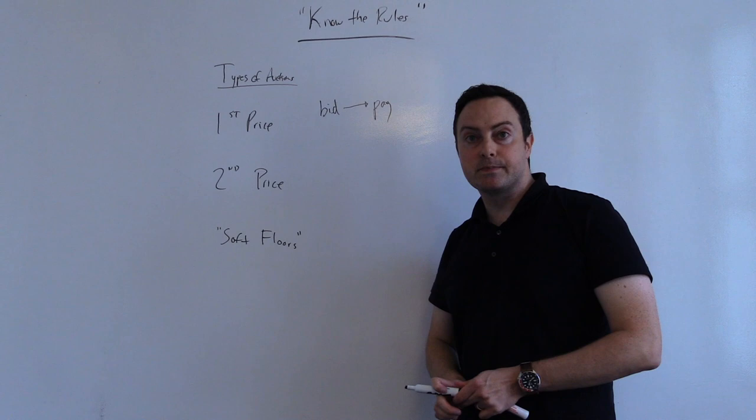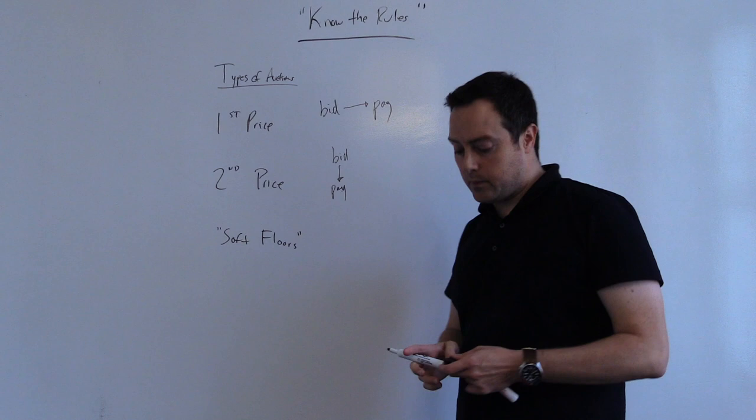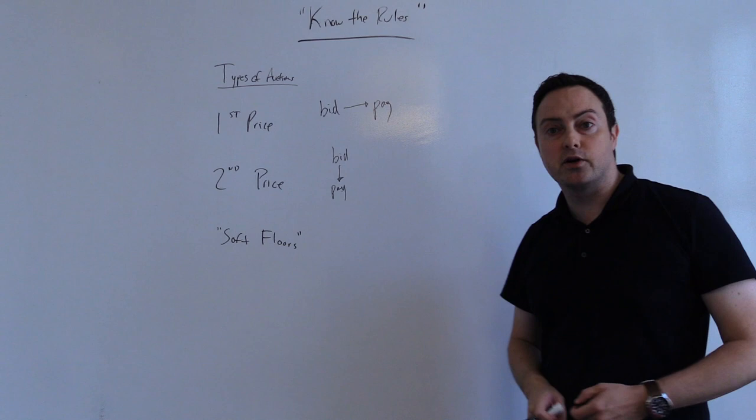The second price auction results in paying less than you bid because the bid price is determined by bid density in the auction, which is a function of taking the highest bid and price reducing it down to the second highest bid or the floor plus some increment, which is usually a penny.